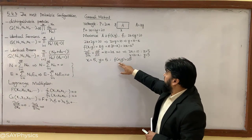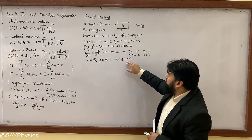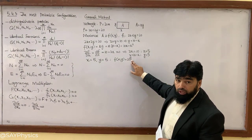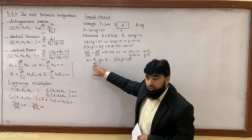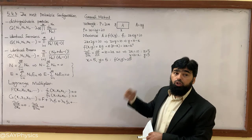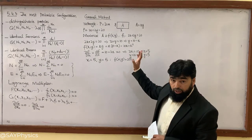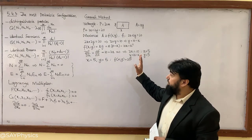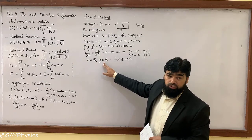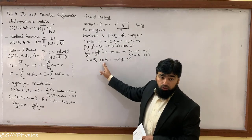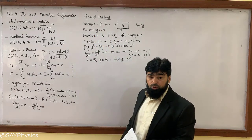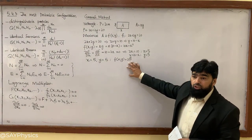So x = 5, y = 5 gives f(x, y) = 25, which is the maximum area. You can verify that no other values of x and y satisfying the constraint 2x + 2y = 20 can produce an area greater than 25. This completes the general calculus method for constrained maximization.